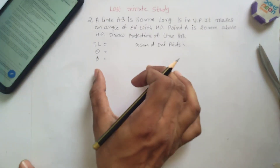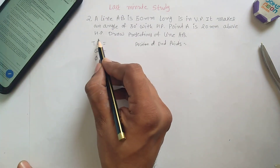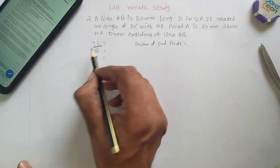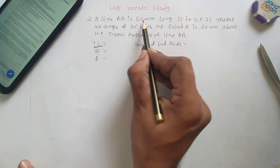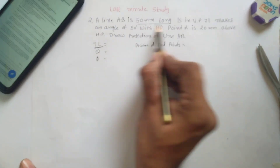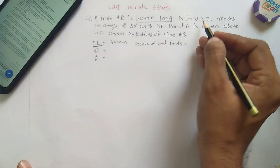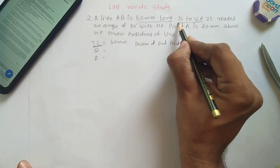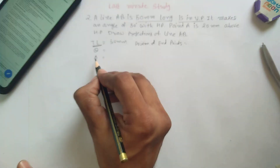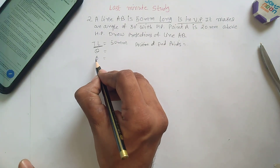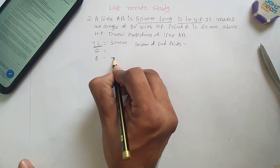Once you have these four initial data points, you can start the problem. First, find the true length of the line — read the statement carefully. A line AB is 50mm long, so true length is 50mm. It is in the VP, meaning it is not making an angle with respect to VP, so phi is not applicable here.